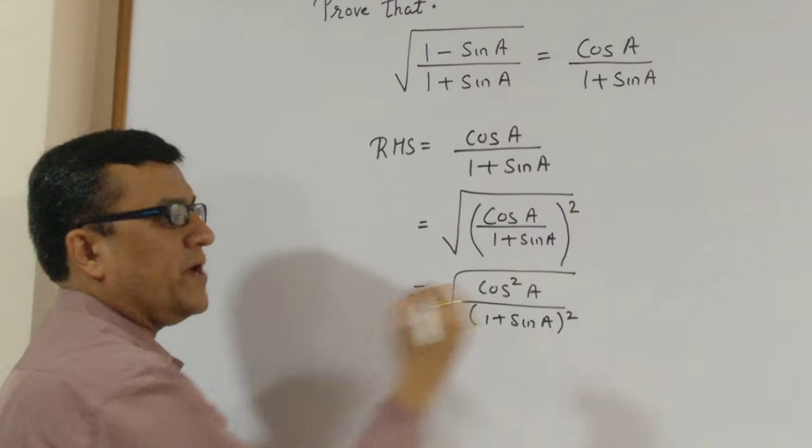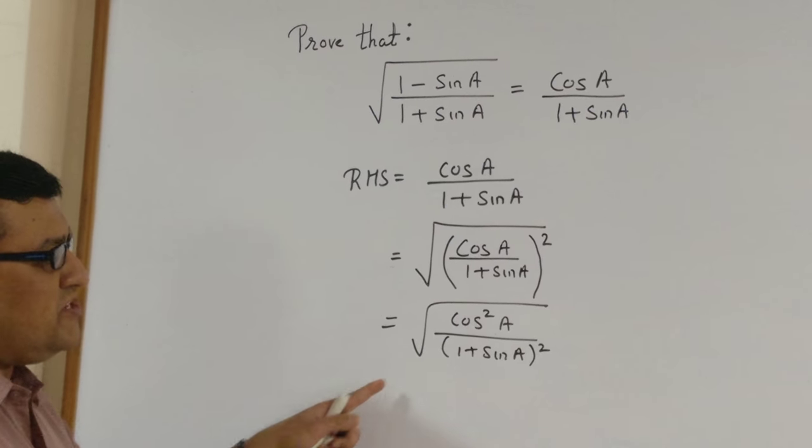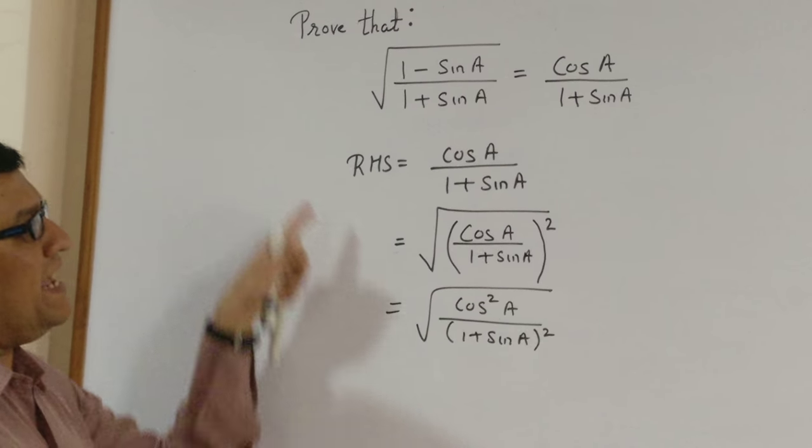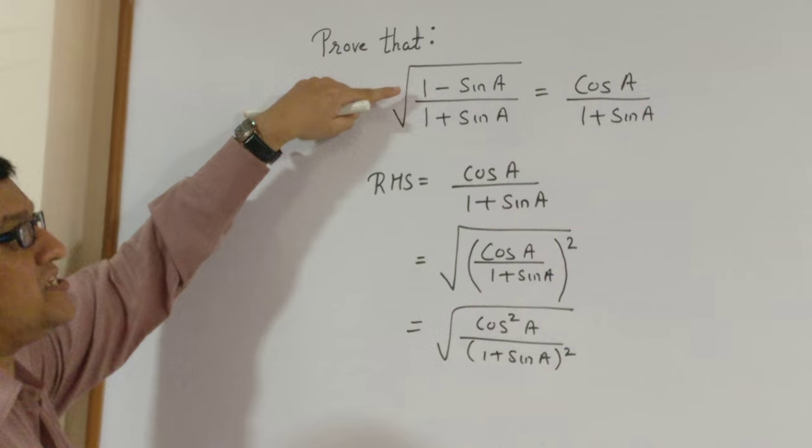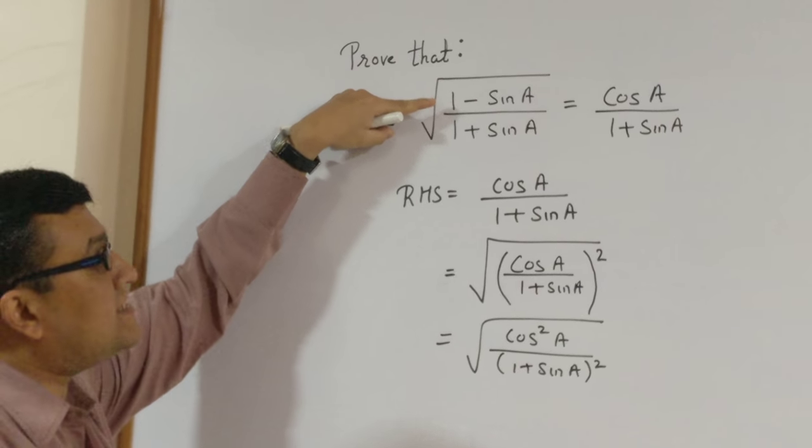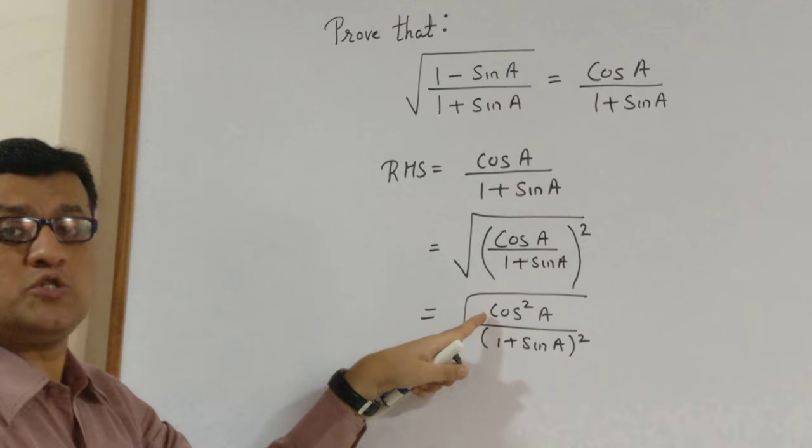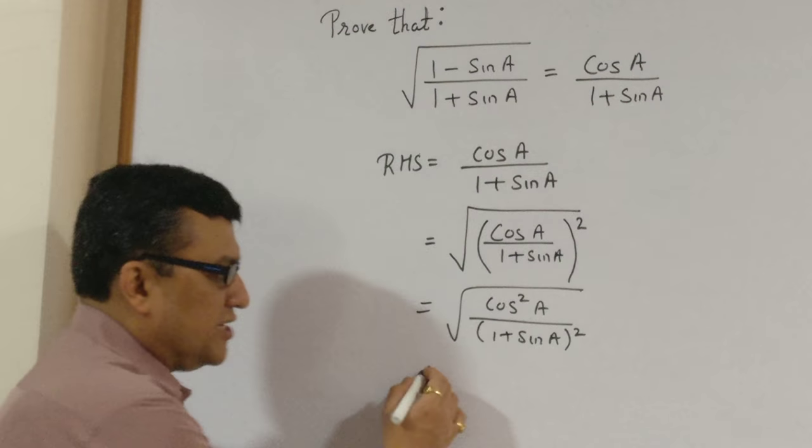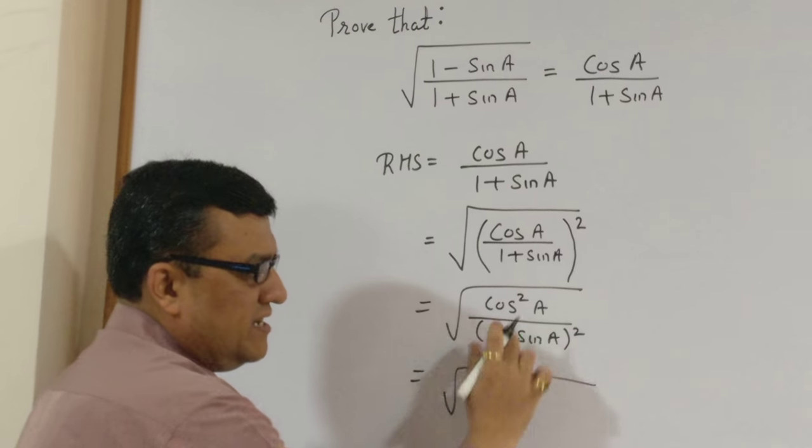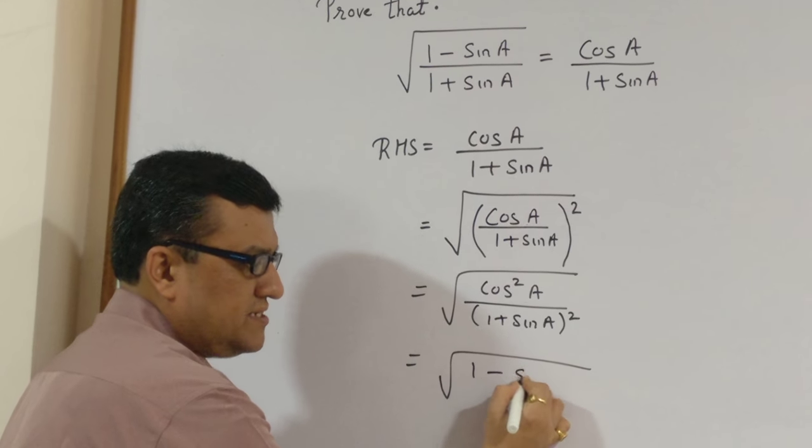After this I shall once again have a look at my LHS. What I need in my LHS, in the numerator I want 1 minus sine A, but I have cos square A. So I shall say cos square A is nothing but 1 minus sine square A.